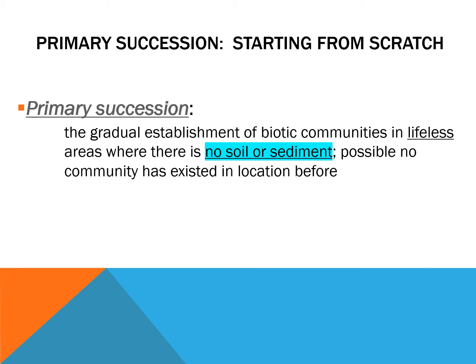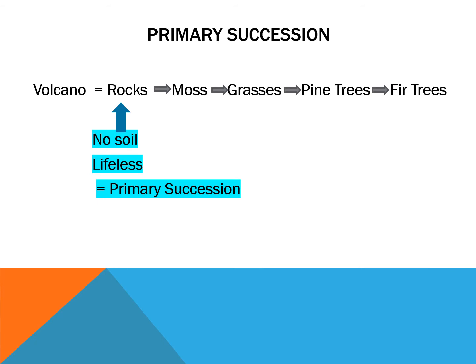On AP tests they make a distinction between primary succession and secondary succession. In primary succession there's no soil — it's pretty lifeless. After a volcano erupts, lava flows and covers everything, the lava cools, and now it's just rock. There's no soil, it's a lifeless landscape. The series of plant communities that appear after that, starting from this zero point, is called primary succession — there's really not been a community there before, or it's been completely annihilated.